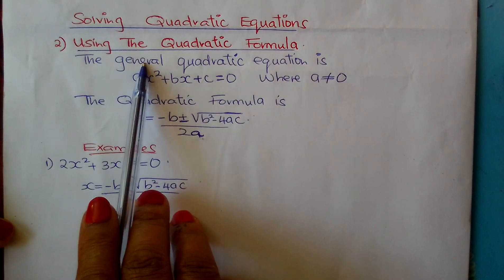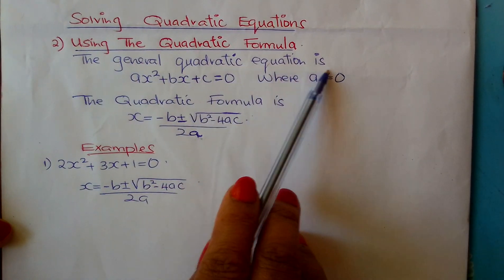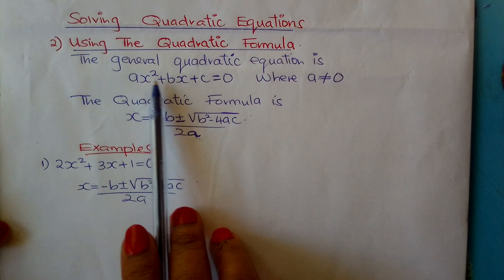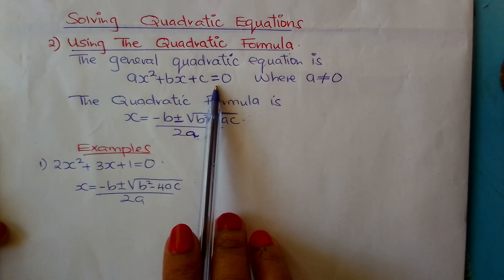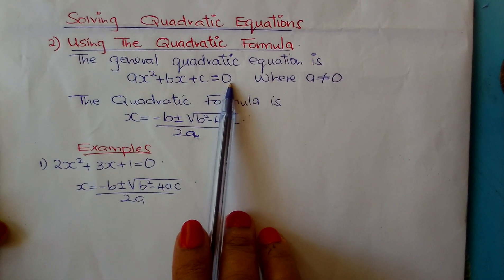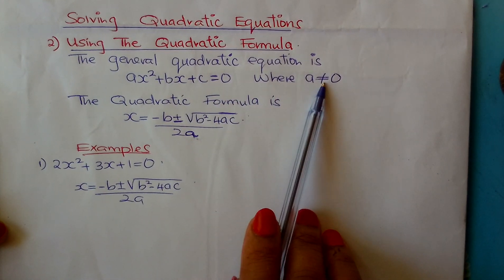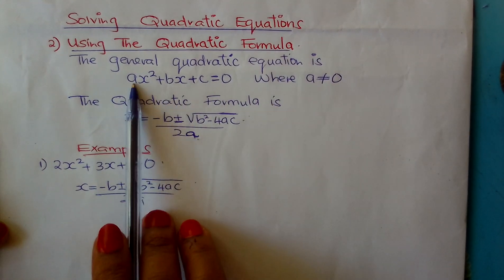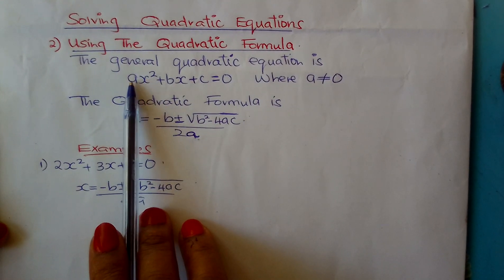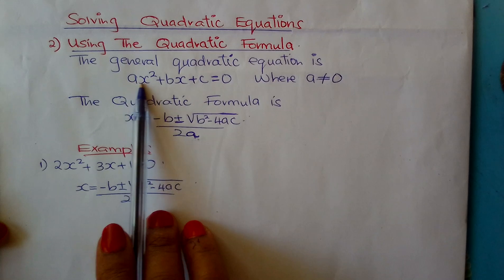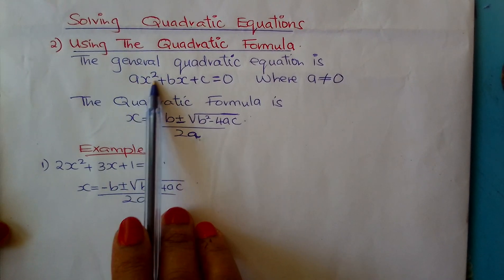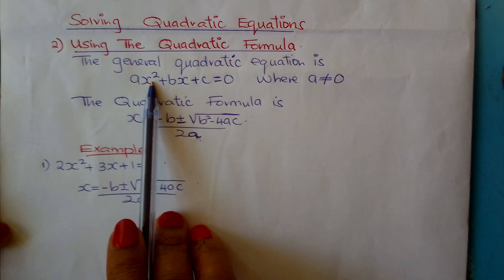The general quadratic equation is ax squared plus bx plus c equals zero, where a is not equal to zero. If a were equal to zero, this term would disappear because it would be equal to zero.